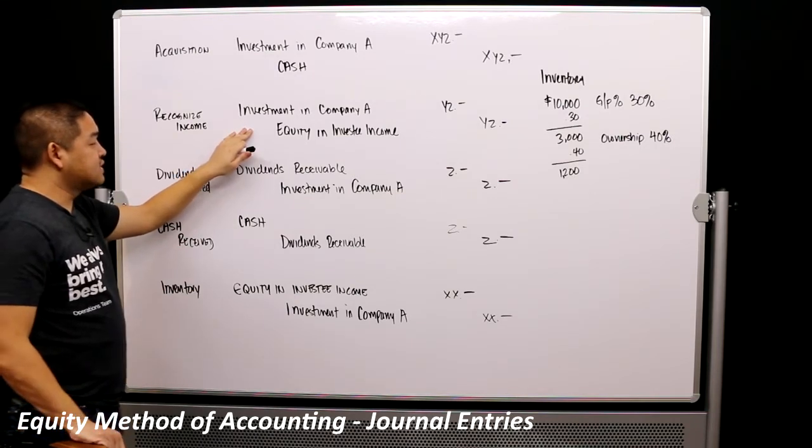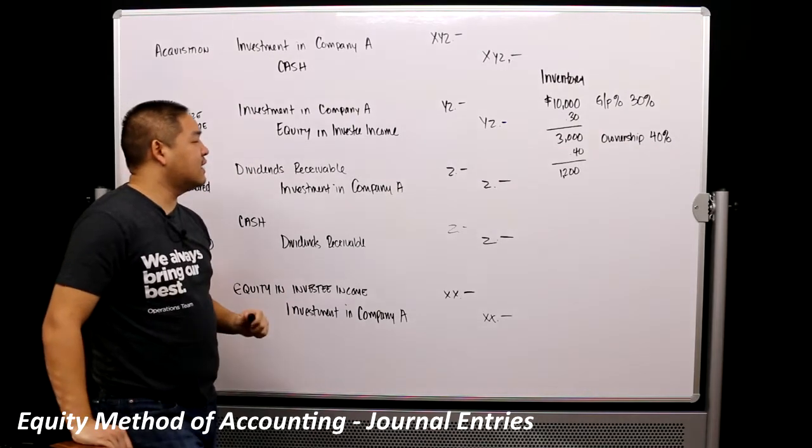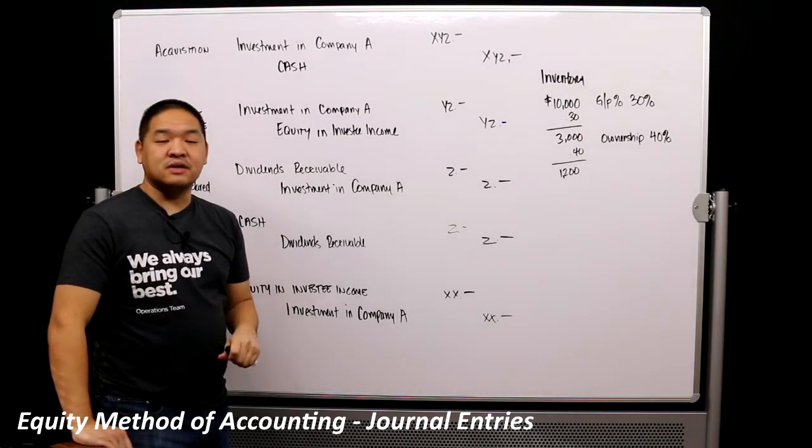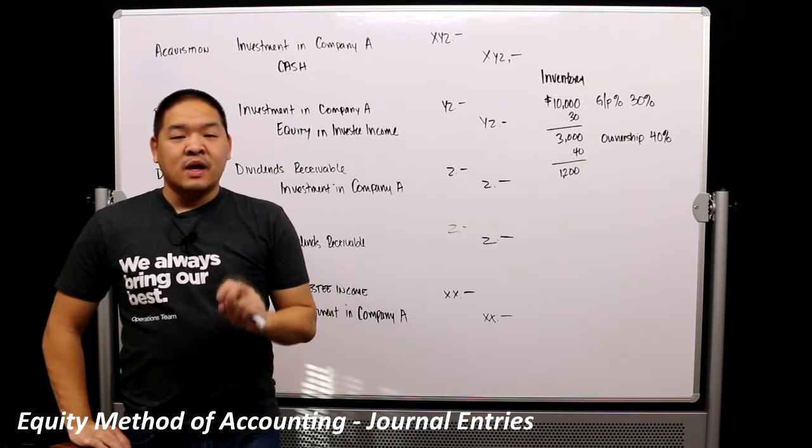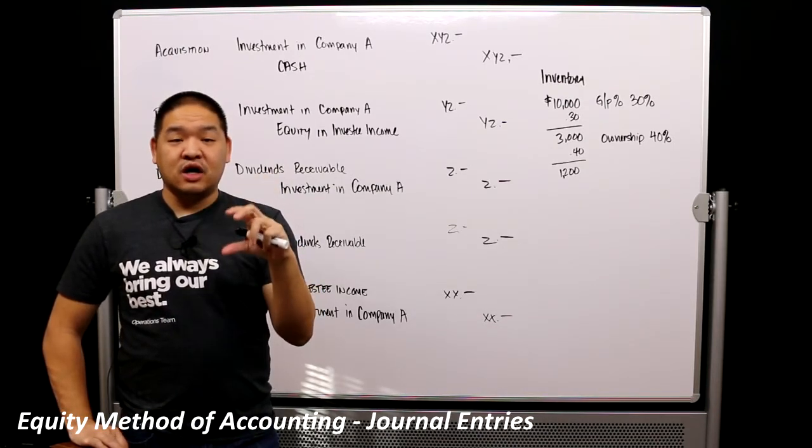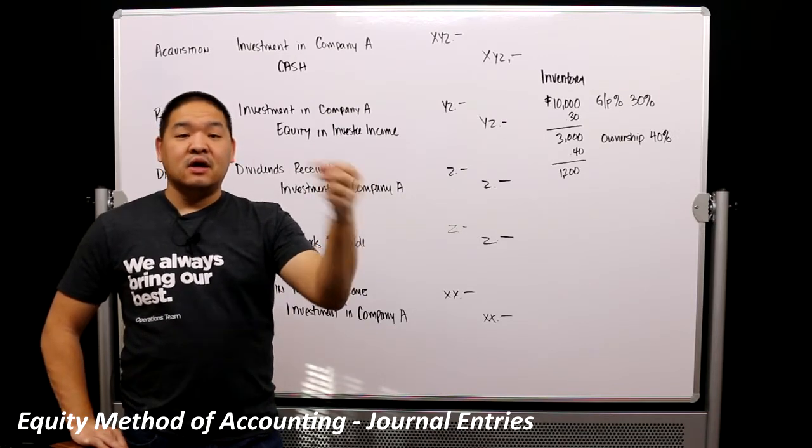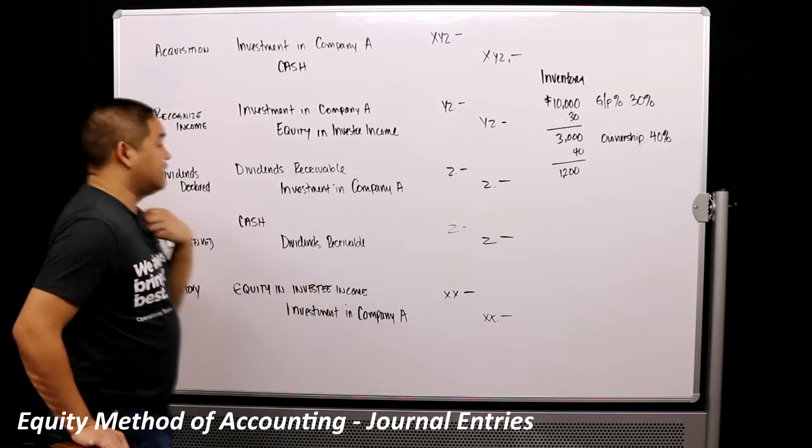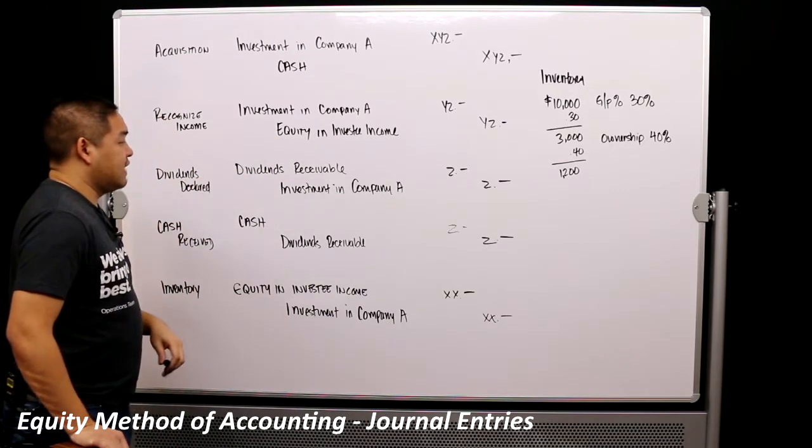We would debit that for $25,000, and we would credit an account called equity and investee income for $25,000. That's the new account for us here in the equity method of accounting. This account really just keeps charge of the income that's attributed to our ownership in the investee based on our equity of that investee. So credit equity and investment income for $25,000.